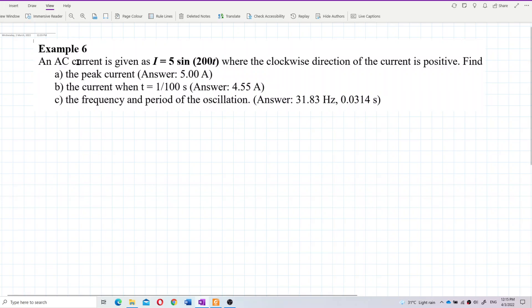Okay, an AC current is given by this equation where clockwise direction of the current is positive. Find the peak current, the current when t equals 1 over 100 seconds, and the frequency and period of the oscillation.